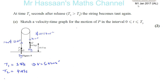We have M1 from January 2017, continuing on now with question number 8, part E. It says: at time 3 seconds after release, the string becomes taut again. Sketch a velocity-time graph for the motion of P over the interval.